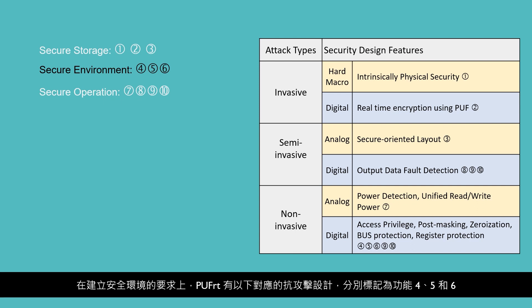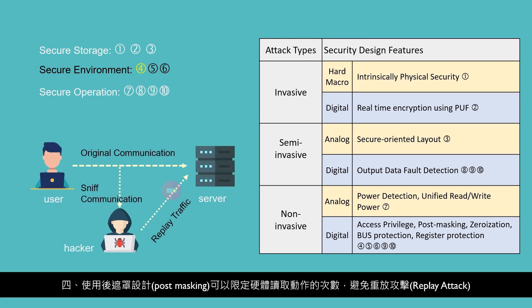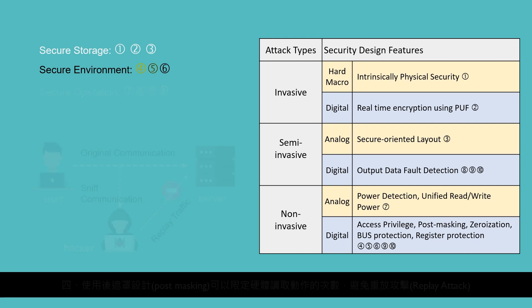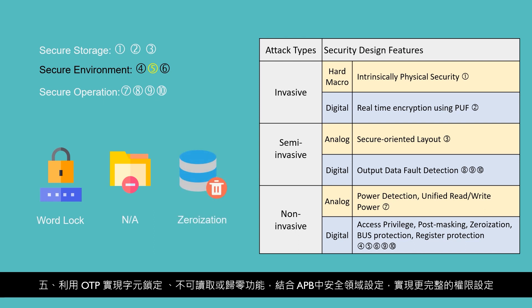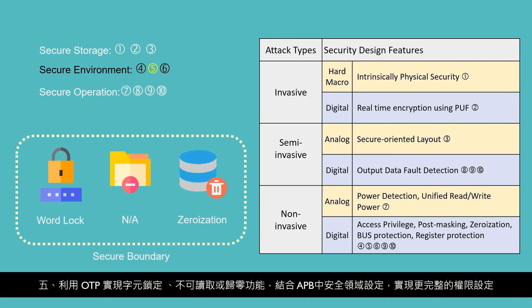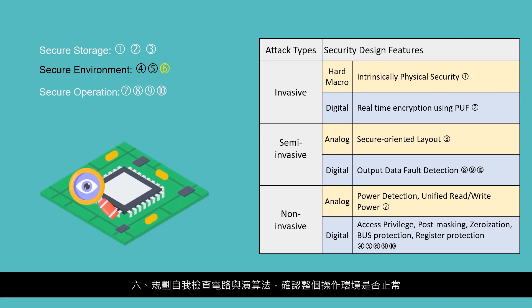In terms of secure environment, PuffRT also has the following functions. Fourth, PuffRT can limit the number of hardware readings to avoid replay attacks with post-masking design. Fifth, PuffRT utilizes functions such as word lock, non-accessible, or zeroization implemented in security OTP, and combining with the security zone settings in APB to realize a complete privileged setting. Sixth, implementing a self-health check circuit and algorithm to continuously monitor the entire operating environment for any abnormal behaviors in the circuit.